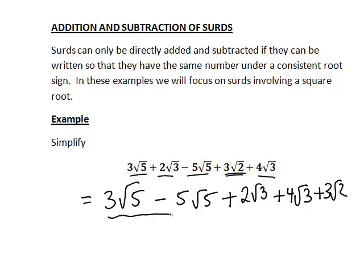So these two in terms of √5 will be able to simplify to one term and these two involving the square root of 3 will simplify to one term. So let's look at this first pair, 3√5 - 5√5. So that's 3 lots of the square root of 5 subtract 5 lots of the square root of 5. Now 3 minus 5 is -2, so this is going to give us -2 lots of the square root of 5.